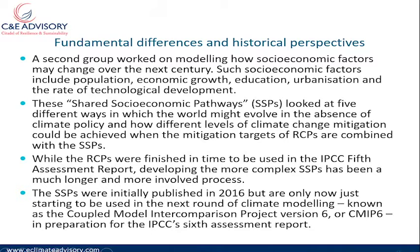A second group of researchers worked on modeling how socioeconomic factors — including population, economic growth, education, urbanization, and the rate of technological development — may change over the next century. This is what is now called the Shared Socioeconomic Pathway. It looks at five different ways in which the world might evolve in the absence of climate policy, and how different levels of climate change mitigation could be achieved when the mitigation targets of RCPs are combined with SSPs.